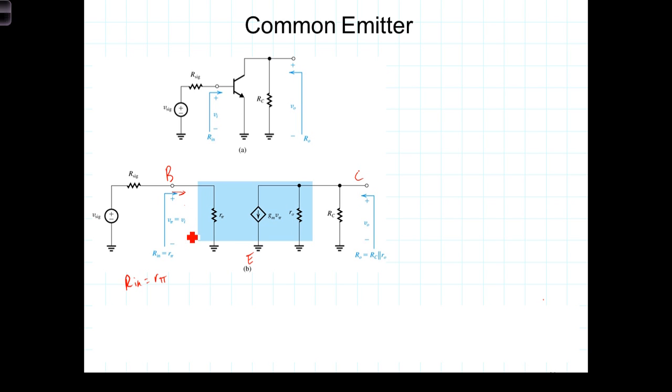V in is the result of the voltage division of the signal with the signal input, or the equivalent resistance of the signal and R sub pi. So V in then is equal to V sig times R pi divided by R pi plus R sig.